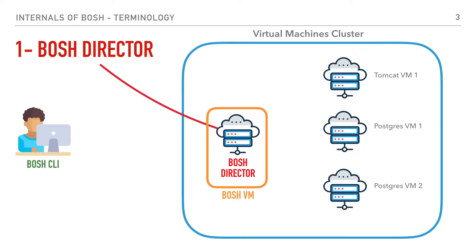To start, our first term will be the BOSH director. In the BOSH domain, the BOSH director term can refer mainly to two things, and you will see users use them interchangeably. The first is used to refer to the BOSH VM itself. For example, we will say 'let's create a BOSH director,' which really means let's create a VM and install the BOSH software on it. The second way the BOSH director term is used is to refer to a very specific process running on the BOSH VM alongside other processes.